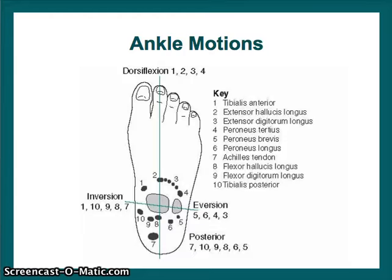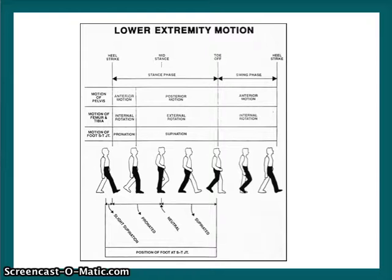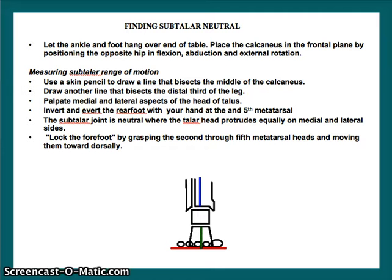That might be helpful for some of you. We also discussed in class the stages of gait. Review this if you don't quite understand the lower kinetic chain and what happens when you go into pronation at the subtalar joint. The next few slides are the same ones that you have in your packet, going through and finding subtalar neutral — these are the instructions.